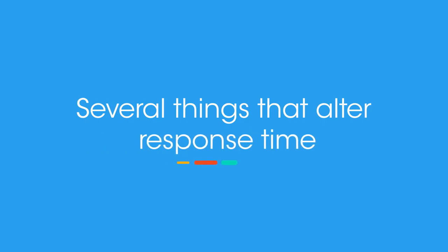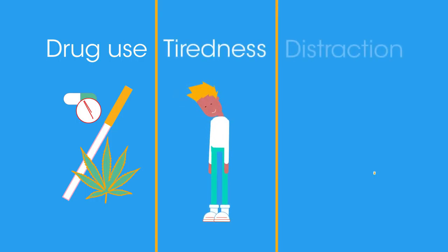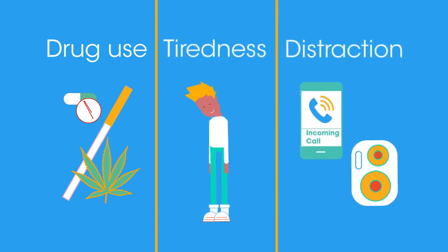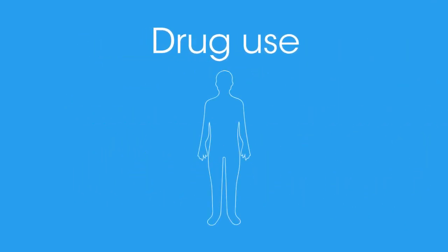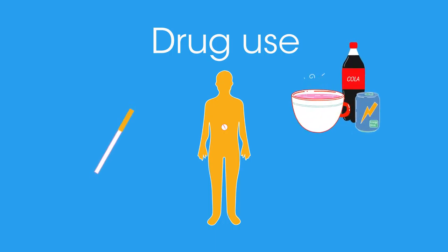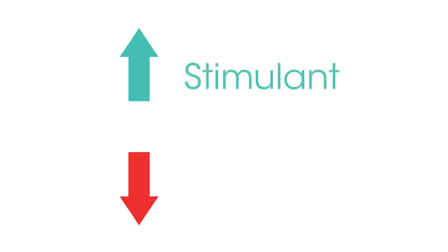Several things can alter the response time to a stimulus in everyday life: drug use, tiredness, or distraction. A drug is any substance that when ingested alters the way the body performs. Drugs that we commonly take might include nicotine from smoking, caffeine from beverages, and alcohol from drinks. There are also a whole range of medications routinely supplied by medical practitioners. Drugs from whatever source may be classified as being a stimulant or a depressant.